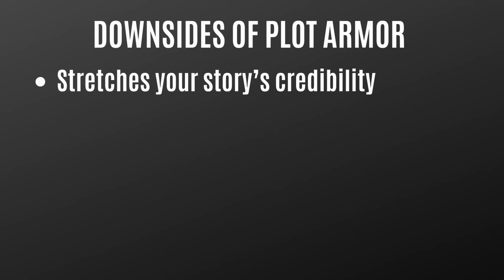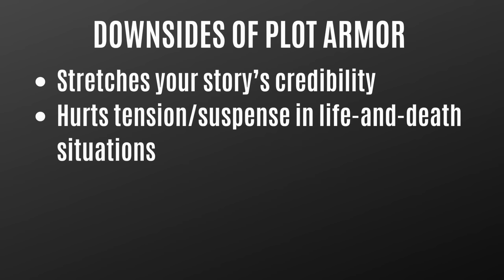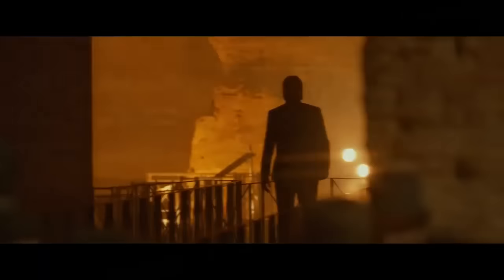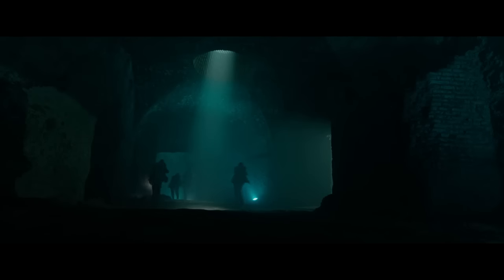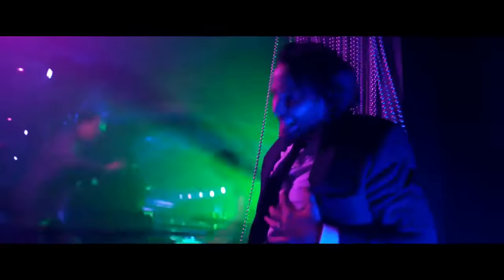Another downside is that plot armor takes away from your story's tension and suspense, especially in life and death situations. Audiences know that a main character can't be killed early on in a story, so when situations get dangerous, the audience won't necessarily fear for the character's life. The John Wick movies are an example — when John Wick enters a room full of assassins, we know he's going to survive no matter how many bullets, knives, or fists get thrown his way. It's never a question of will he survive, but rather how he'll kill all the bad guys. These movies actually embrace John's plot armor, and audiences love these stylish action sequences. That's the whole selling point. Keep in mind, this works for John Wick, but it may not work for your book or a story in a different genre.